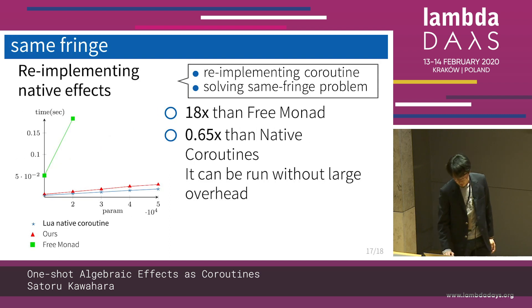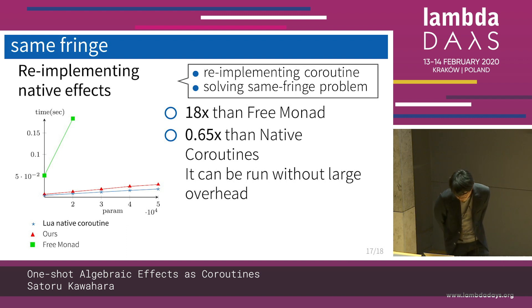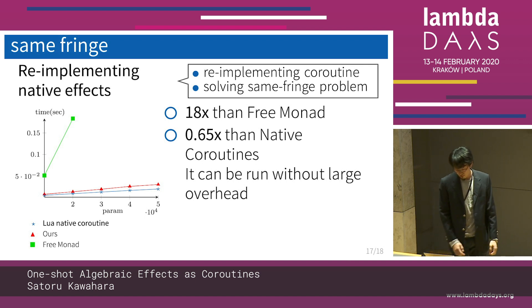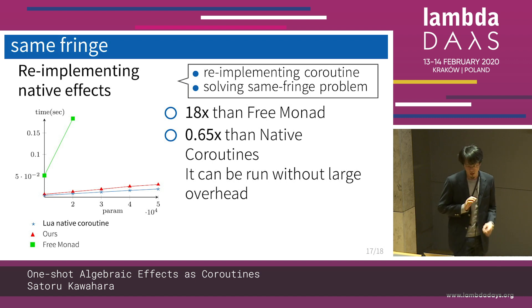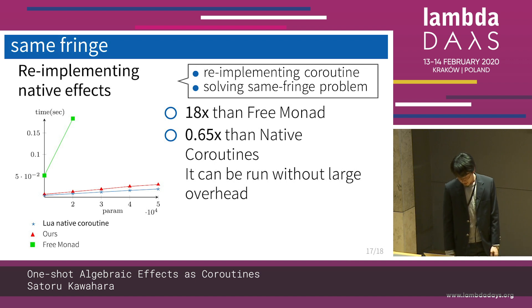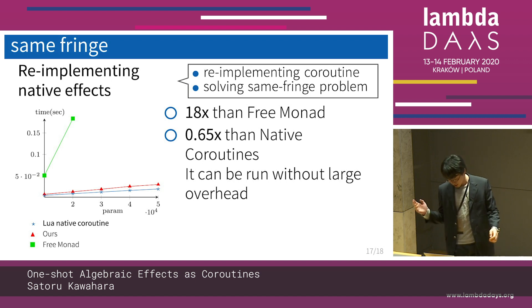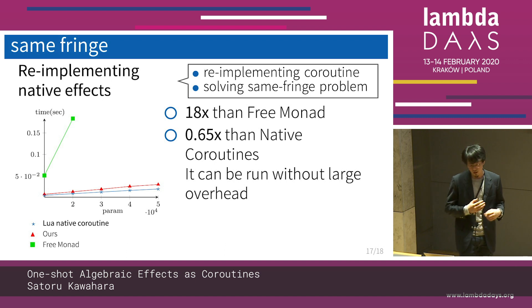The last benchmark solves the same-fringe problem. We compare coroutines implemented by algebraic effects versus native coroutines in Lua by solving this problem. The result is 18 times faster than the free monad, and our method is only 0.65 times slower than native coroutines in Lua. This means that coroutines can be managed as one of the algebraic effects without interference and without a large overhead.